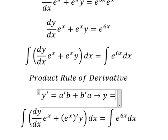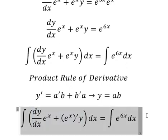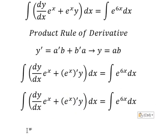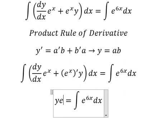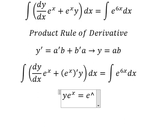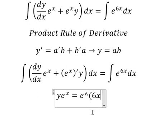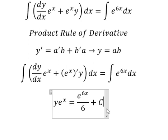So the interpolation of this one, we have Y equals to A·B. So the interpolation of that one, we have Y·e to the power of X. This one, we have e to the power of 6X over number 6. And then we divide both sides by e to the power of X.